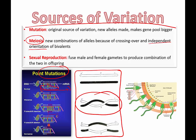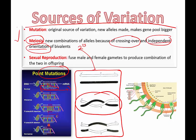Another way is independent orientation, which happens in metaphase one — how the homologous chromosomes line up on the equator can also produce new variations. The number 2 to the power of 23 should look familiar: that's the number of different combinations you can get just from independent orientation, also called independent assortment or random assortment. So crossing over in prophase one and independent orientation in metaphase one are how meiosis contributes as a source of variation.